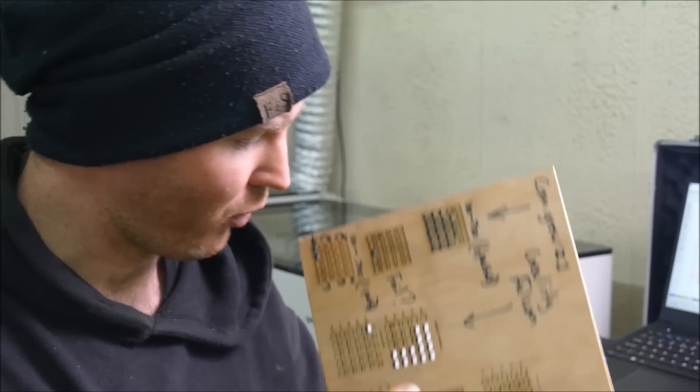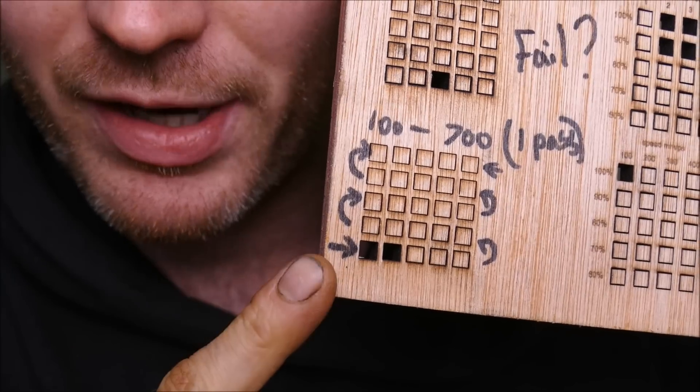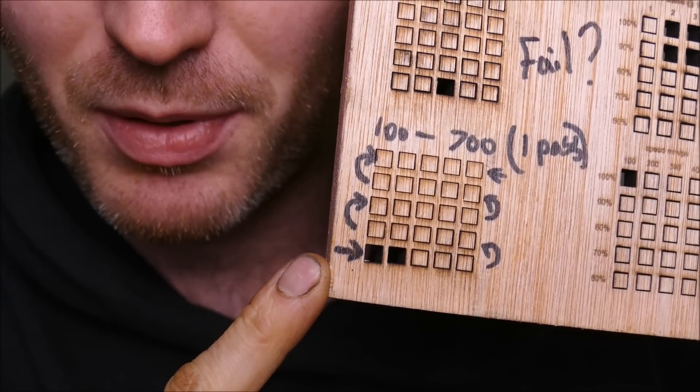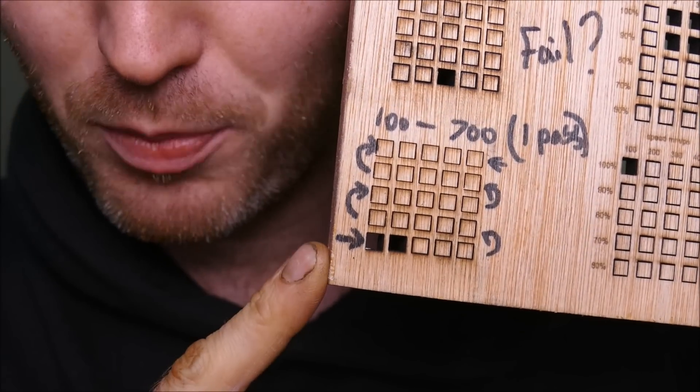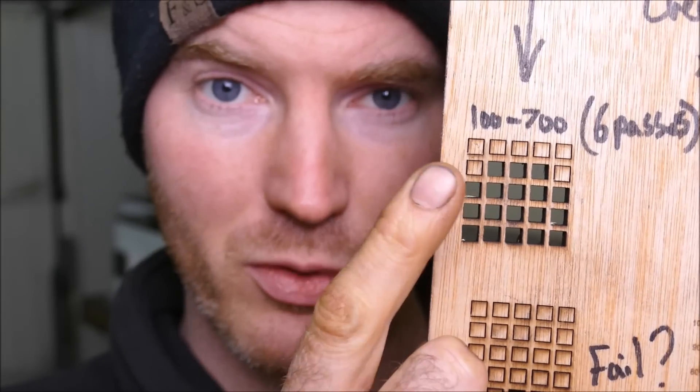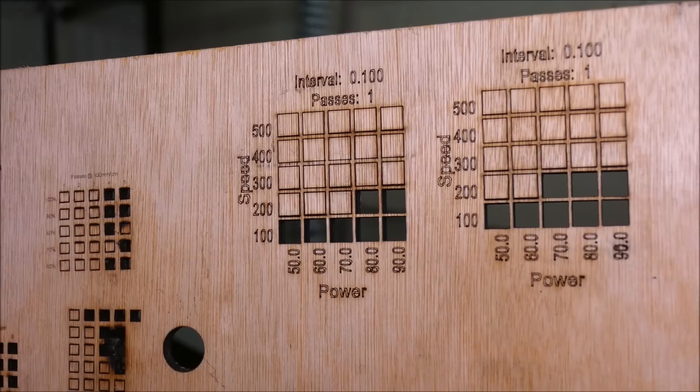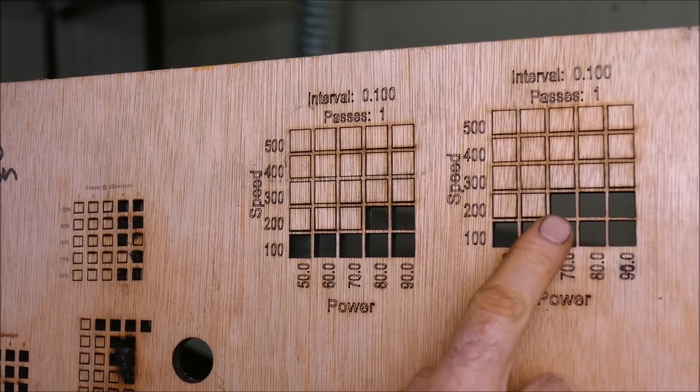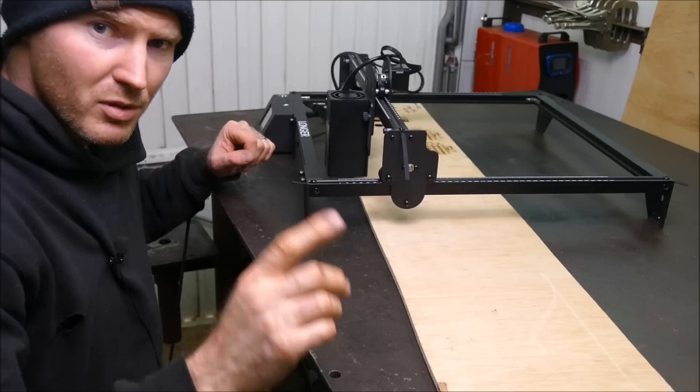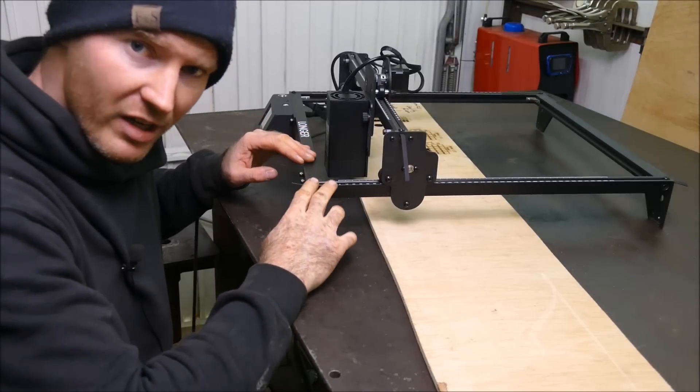So on our previous test the CommGro did quite well. It cuts 9mm ply at 100mm per minute no problem. But that's it full power 10 watts. However if we go slower and do lots more passes. You actually get a really good cut with not too much burning. Now if we upgrade to 20 watts for a single pass we can go twice as fast.